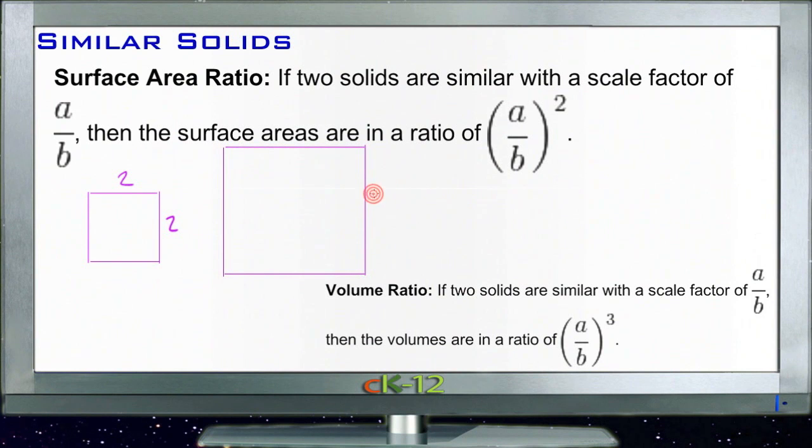If that other square is four by four, then their sides are in a ratio of two to four, or if you like, a ratio of one to two.